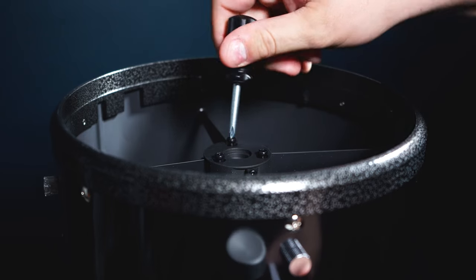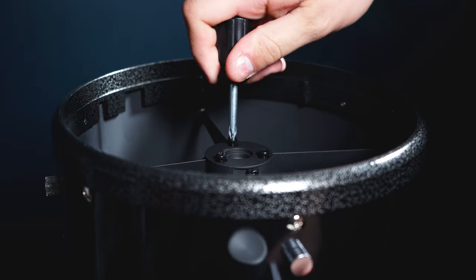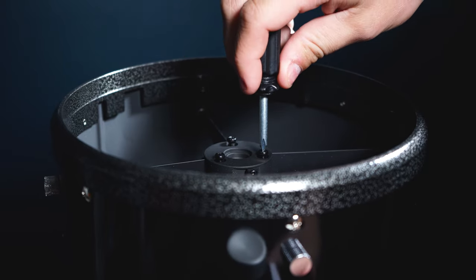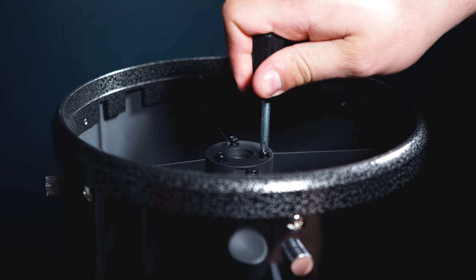Normally, one would adjust the secondary mirror with a hex key or a Phillips screwdriver, which can definitely be a hassle at night. And if you're not careful, your tool can fall down and hit the primary mirror of your optical tube. With the aperture collimation knobs, what you have is a simple way to adjust the secondary mirror by simply turning the collimation knobs themselves.